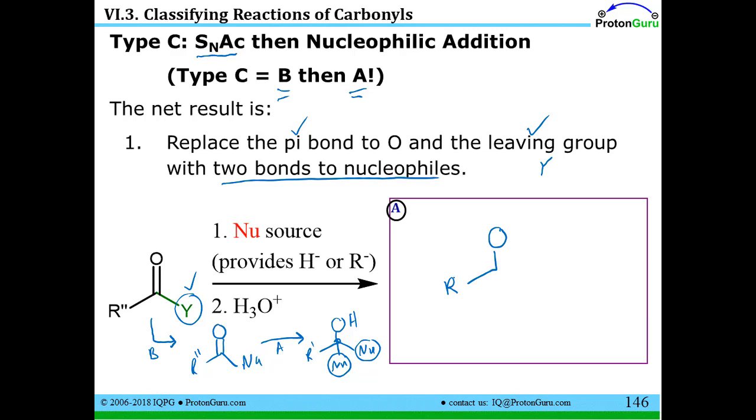All of these reactions you'll notice, you've got to keep track of keeping the carbonyl carbon with four bonds. So take away the pi bond and the Y group, add two new bonds in the form of nucleophiles, protonate. That's the type C reaction.